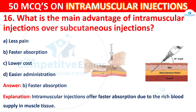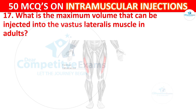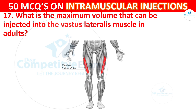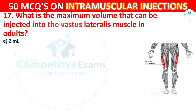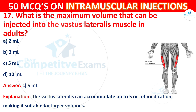Question 17: What is the maximum volume that can be injected into the vastus lateralis muscle in adults? Options are: 2 ml, 3 ml, 5 ml, or 10 ml. The correct answer is C, 5 ml. The vastus lateralis can accommodate up to 5 ml of medication, making it suitable for larger volumes.